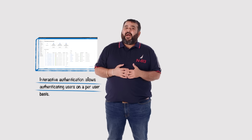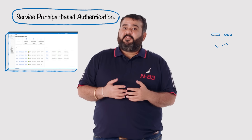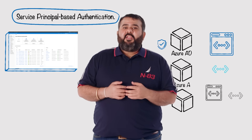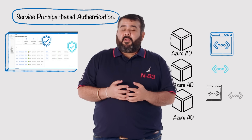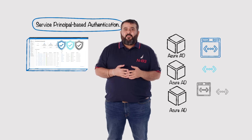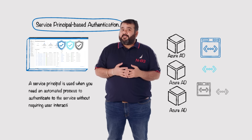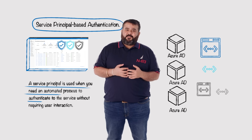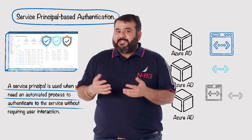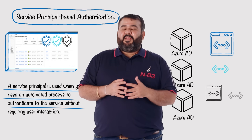Then you have service principal, where you can create a service principal account in Azure Active Directory and use that to authenticate or get a token. A service principal is used when you need an automated process to authenticate to the service without requiring user interactions. For example, a CI/CD script that trains and tests a model every time the training code changes.